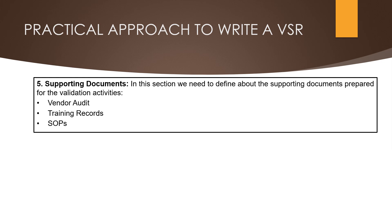Next is standard operating procedures. Here we need to mention the statement that relevant SOPs for the system were prepared, approved, and made effective. We also need to provide details of all relevant SOPs such as SOP number, version number, title of the SOP, and SOP effective date.